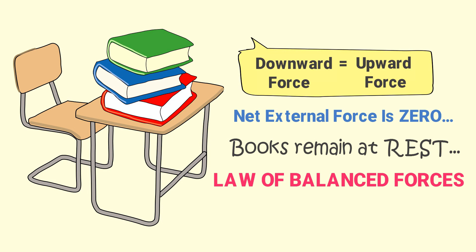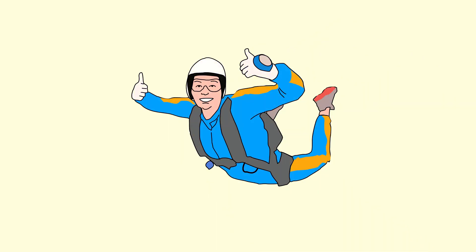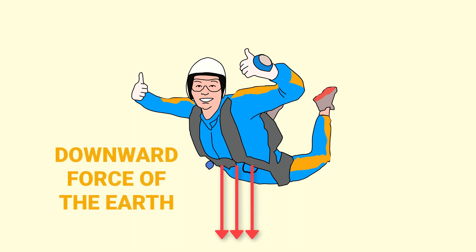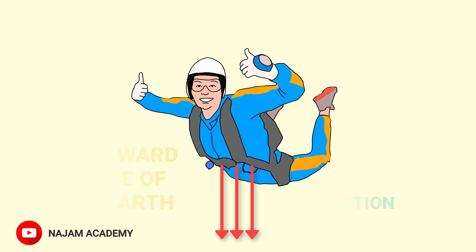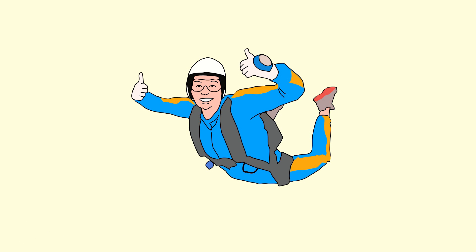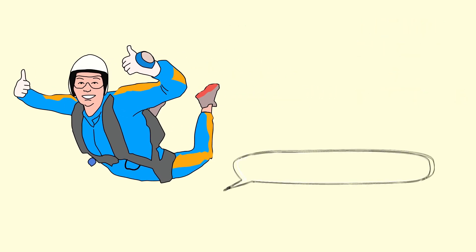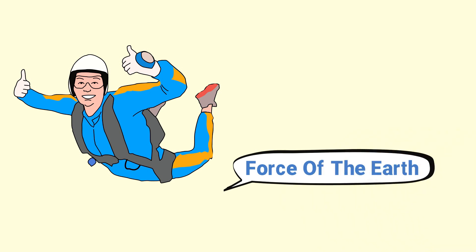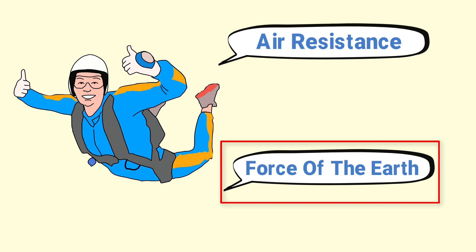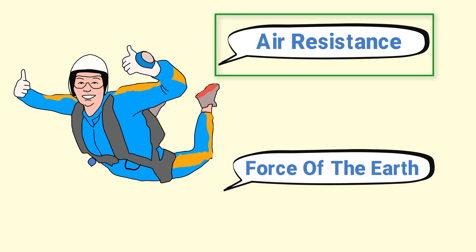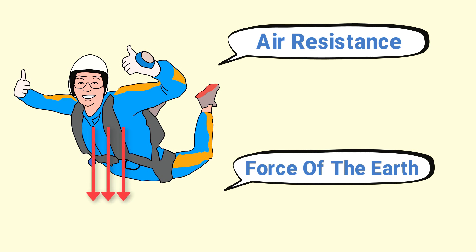The second application of Newton's First Law of Motion is the jumping or free fall of a paratrooper. When a paratrooper jumps off, initially the downward force of gravity on the paratrooper is very high. Hence, this downward force produces acceleration in the paratrooper, and as a result the paratrooper accelerates towards the earth's center. But at the same time, the paratrooper experiences an upward force of air resistance. The downward force of the earth is greater than the air resistance, due to which the paratrooper accelerates towards the center of the earth.